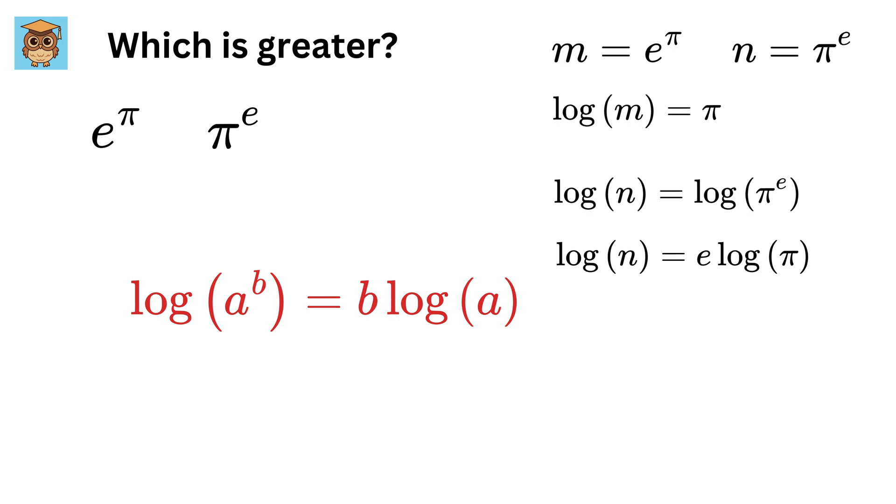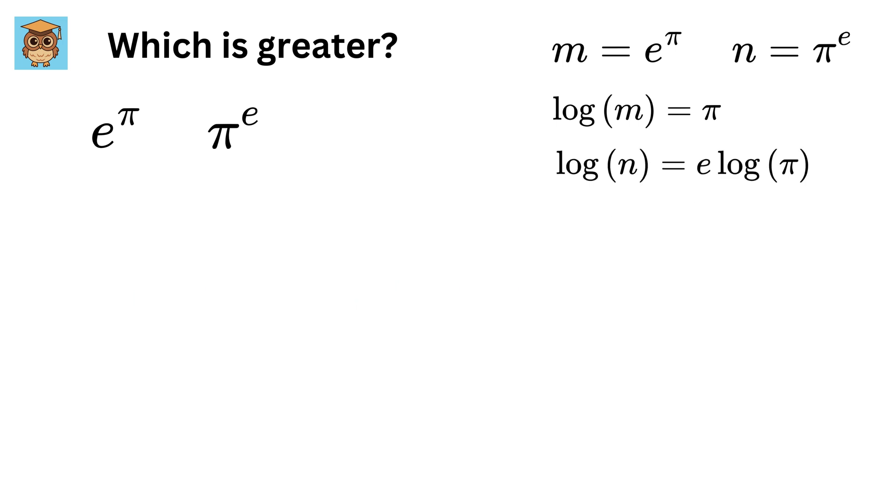Notice that in the above expressions, the value of π appears once as its own value and once as an argument to the natural log function. We can create the following function to compare the quantities: f(x) equals x minus e times log(x). Next, we proceed by looking at the derivative.